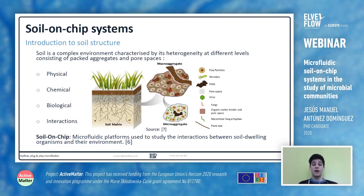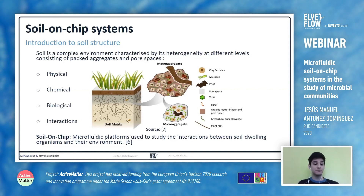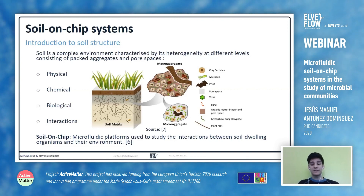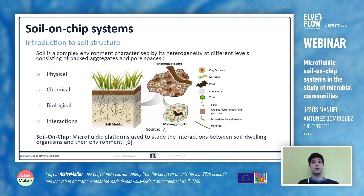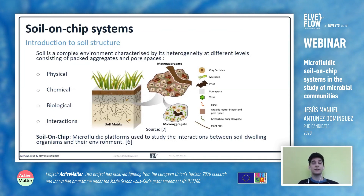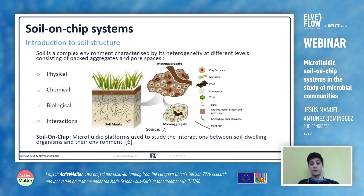These micro aggregates are made of different clay particles and organic matter, and it's where most of the microorganisms in the soil live. From a chemical point of view, these components don't share the same composition, and throughout the volume considered we find different levels of resources important for the microorganisms living in the soil — for example, different levels of water, nitrogen, CO2, or oxygen.